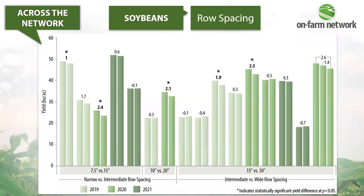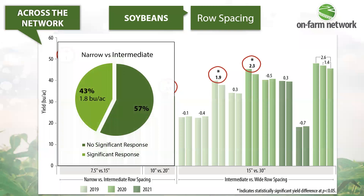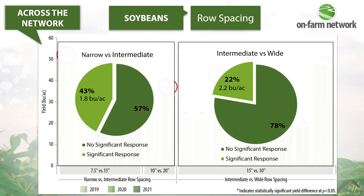Across the network we have 16 row spacing trials to date — seven comparing narrow versus intermediate row widths and nine comparing intermediate 15-inch to wide 30-inch rows. Seeding rate was held constant over the row widths tested. At narrow versus intermediate, we had three significant yield responses; comparing 15 to 30 inches, there have been two yield responses so far — a bit more frequent than small plot research previously suggested. To summarize: narrow rows provided a yield benefit over intermediates 43% of the time, improving yield by just under two bushels per acre. Intermediate 15-inch rows provided a yield benefit over 30-inch rows 22% of the time, improving yield by just over two bushels per acre.